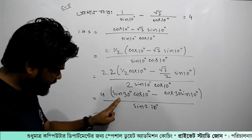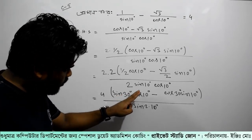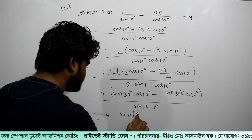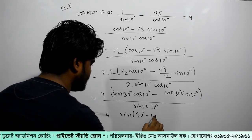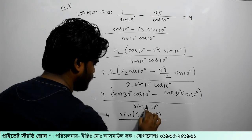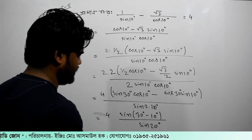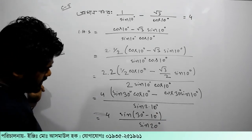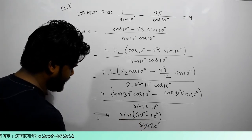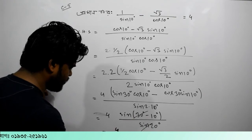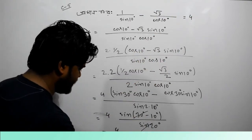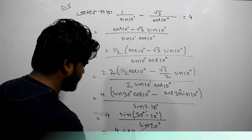This is sin a cos b minus sin b. This is sin a minus b. This is the right hand side, equal to right hand side.